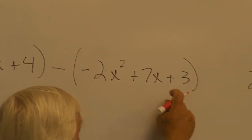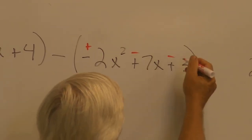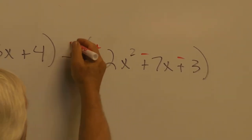When we're subtracting a trinomial, the first thing we're going to do is change the signs. So every sign just gets changed, and then we come back and add.